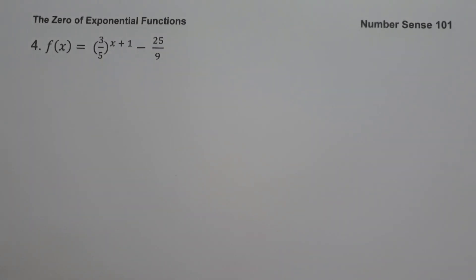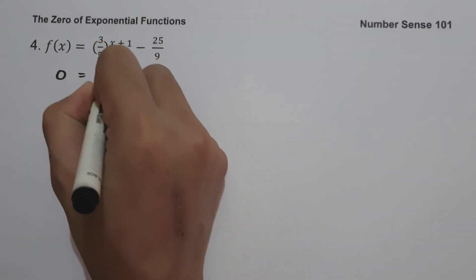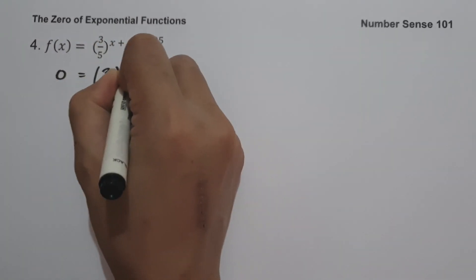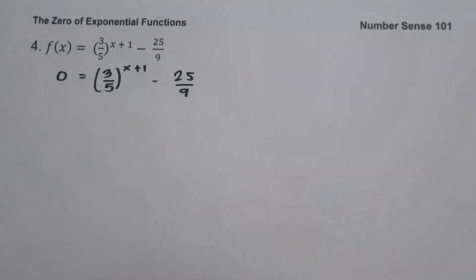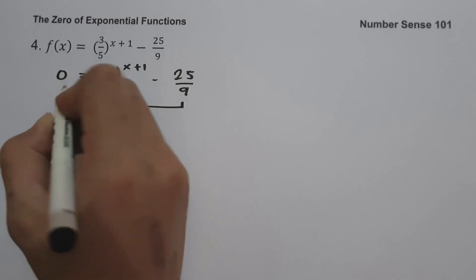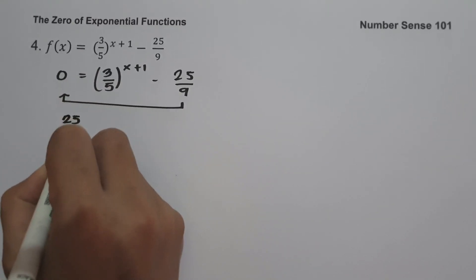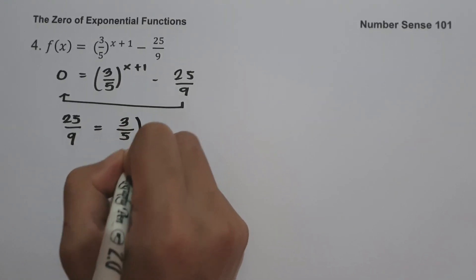On example number four, f(x) = (3/5) raised to (x plus 1) minus 25/9. To find the zero, let us equate the function equal to zero: 0 = (3/5) raised to (x plus 1) minus 25/9. Moving negative 25/9 to the side of zero gives us 25/9 = (3/5) raised to (x plus 1).